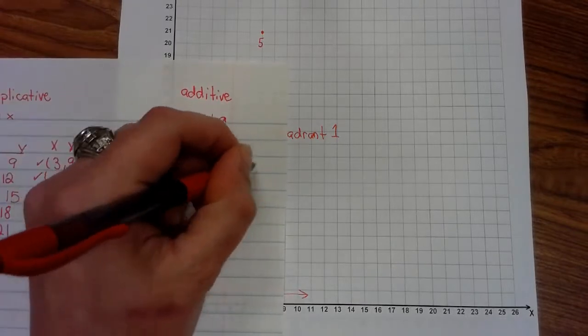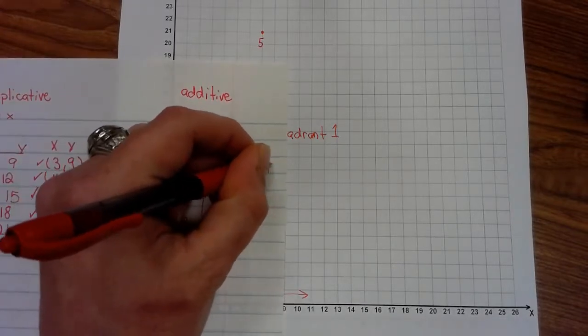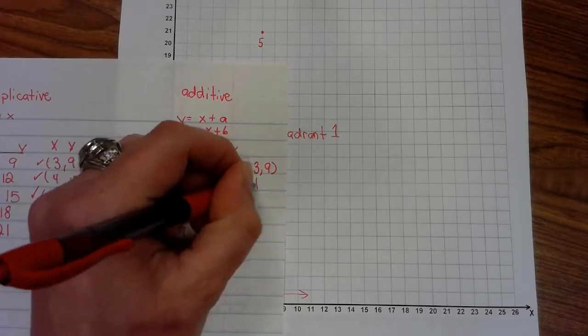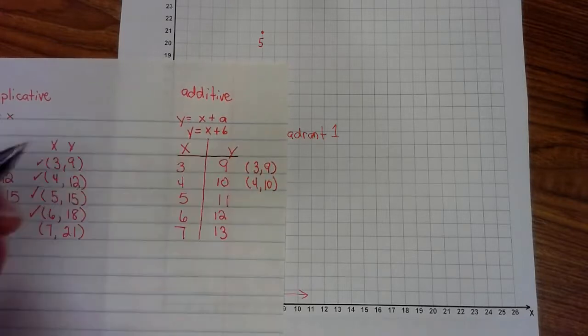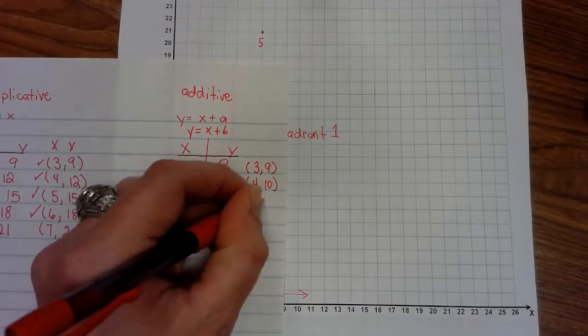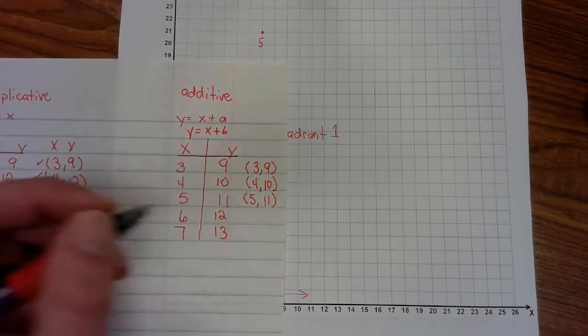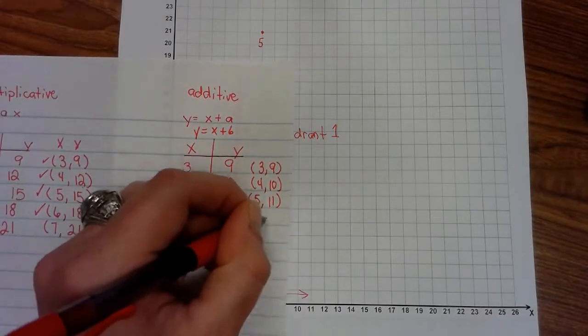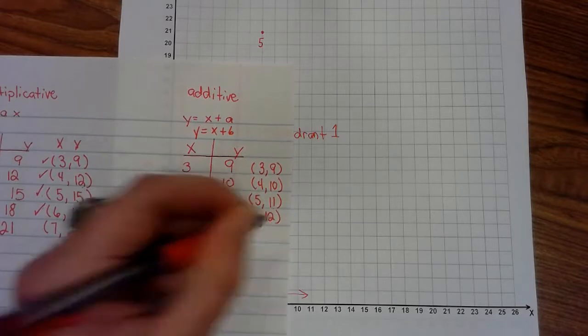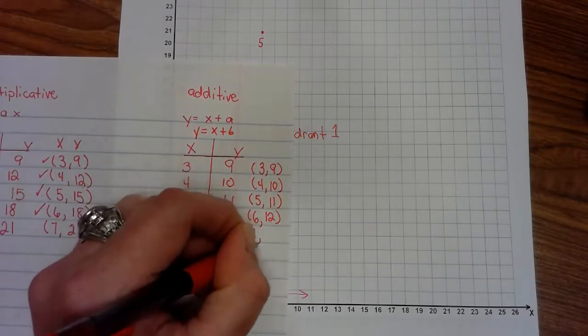And then I write my ordered pairs. 3, 9. 4, 10. 5, 11. 6, 12. And 7, 13.